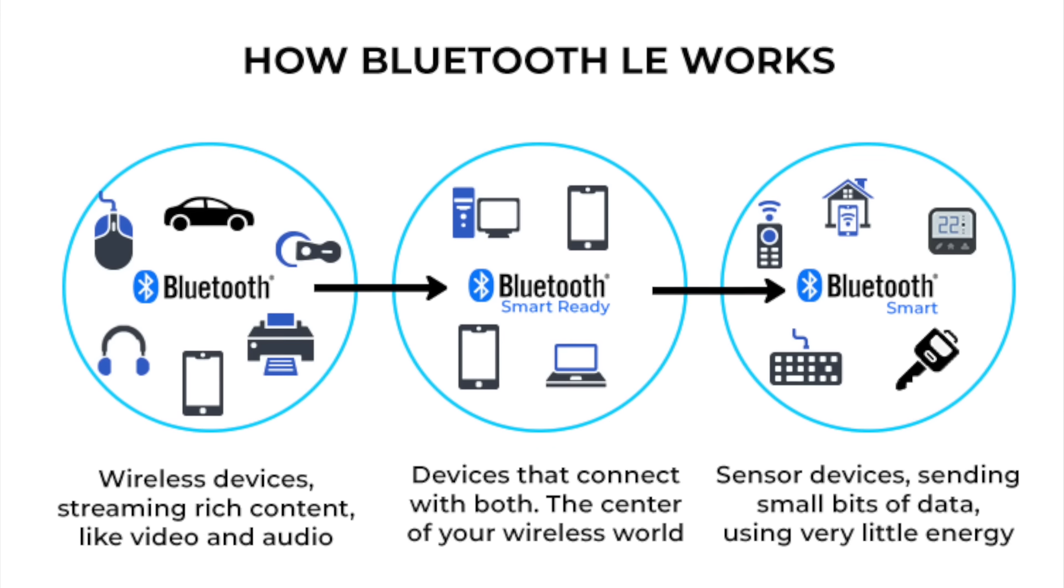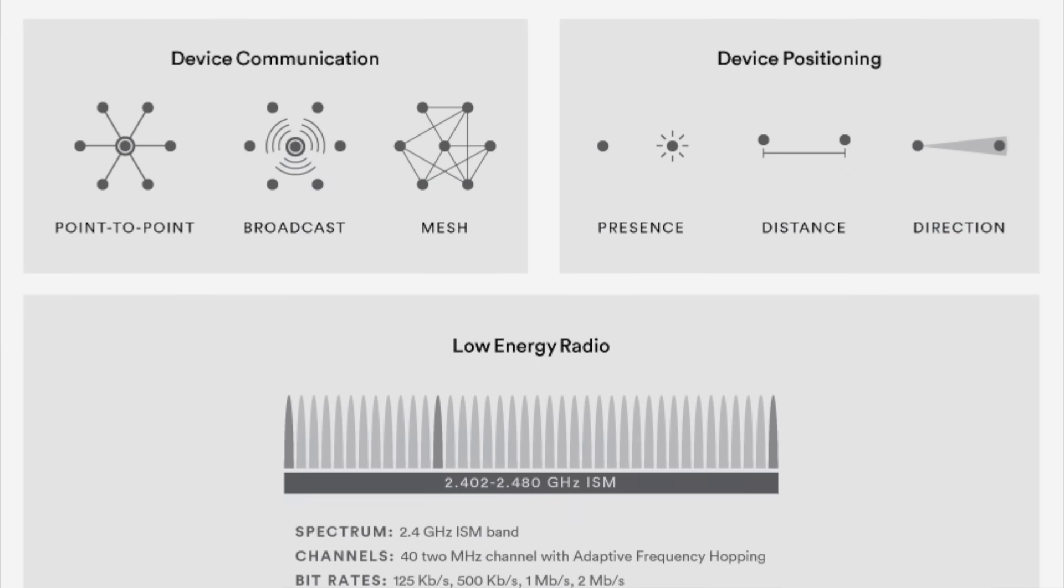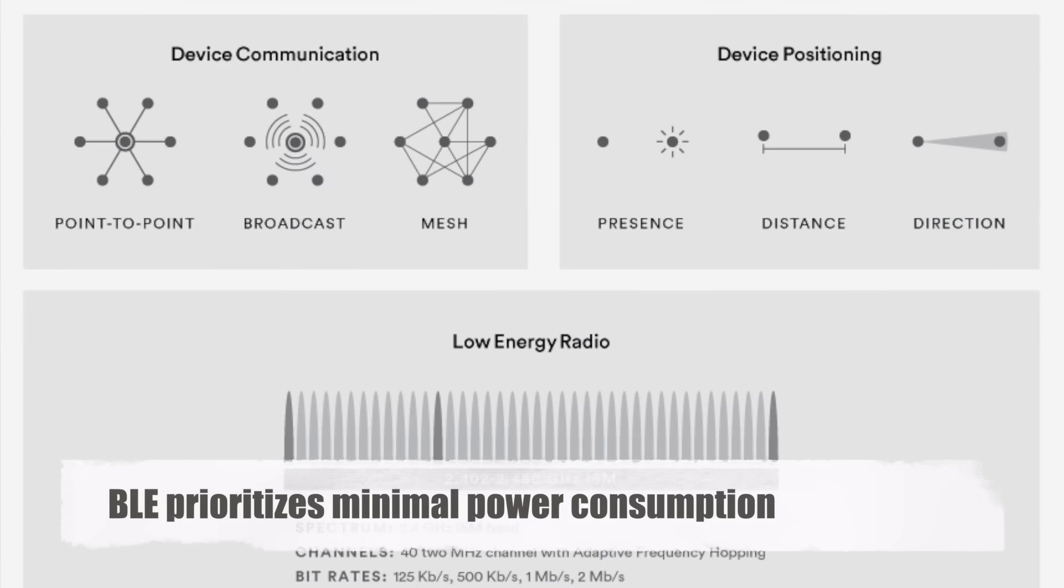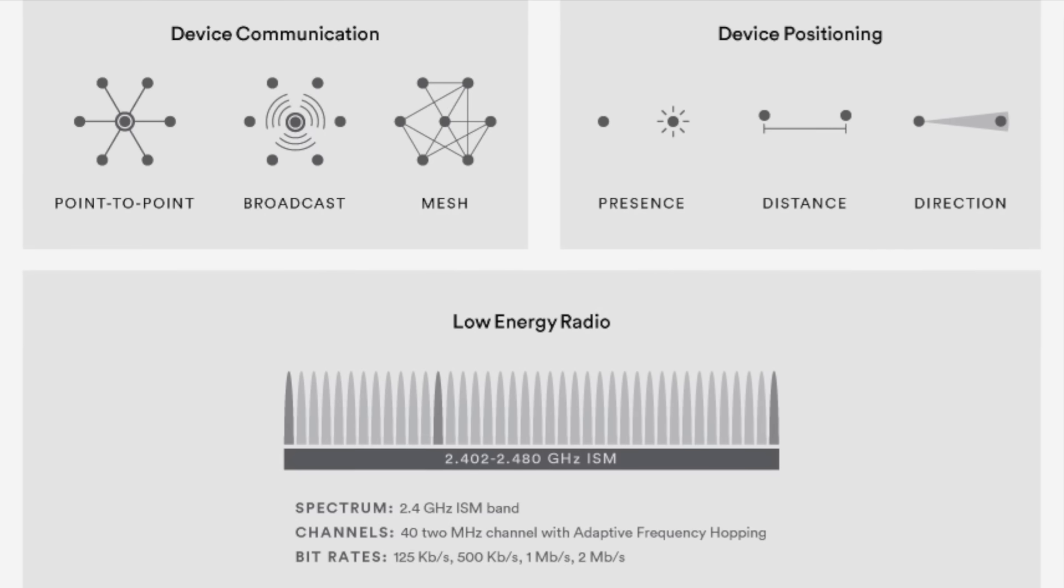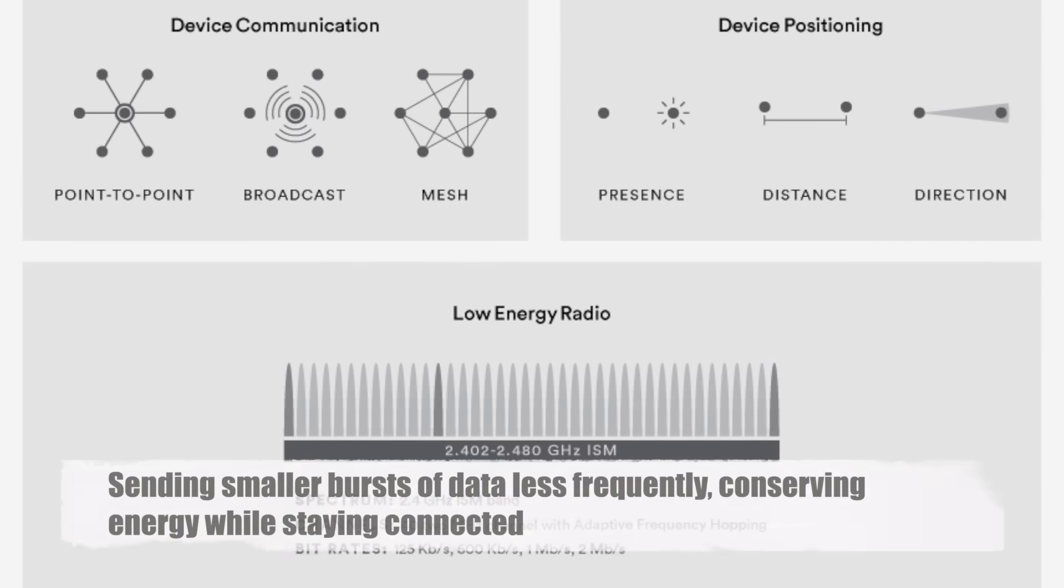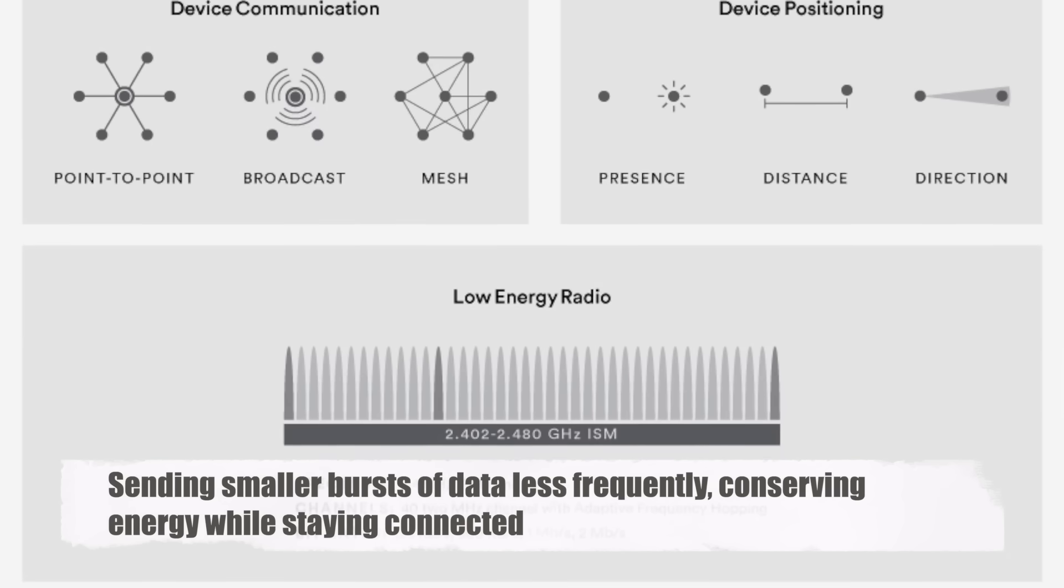Think heart rate monitors, smart locks, or IoT gadgets. Unlike traditional Bluetooth, BLE prioritizes minimal power consumption, making it a game-changer for battery-powered devices. It achieves this by sending smaller bursts of data less frequently, conserving energy while staying connected.